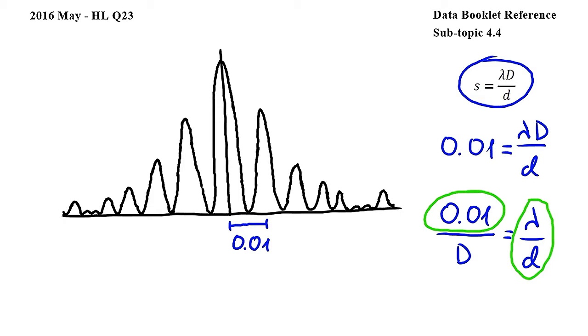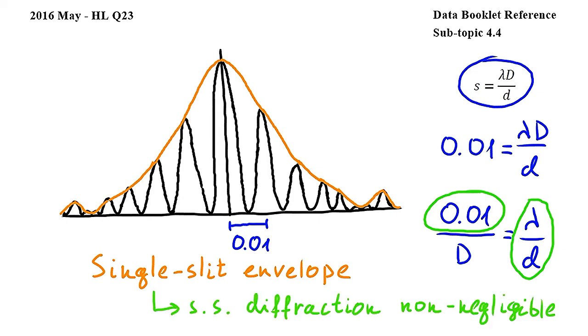Let's now look at the effect of single slit diffraction, examining the intensity graph. We can note that it is possible to draw a single slit envelope on this graph. I have drawn this envelope in orange. Since there is a single slit envelope, we can conclude that the effects of single slit diffraction are non-negligible. Therefore the answer to this question is B.